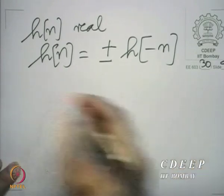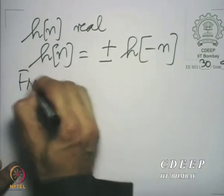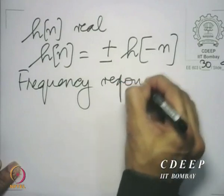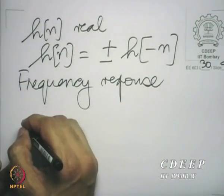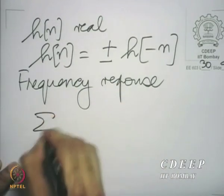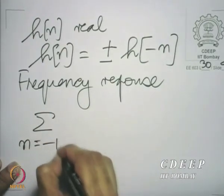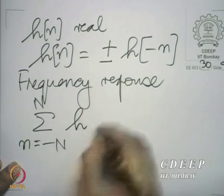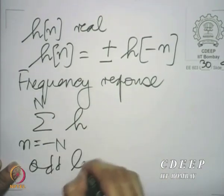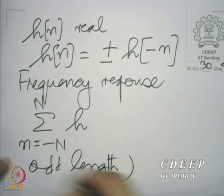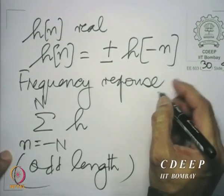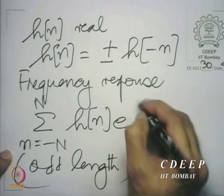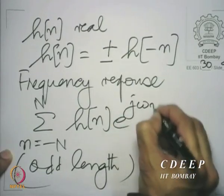Then the corresponding frequency response is of the form: summation n going from minus capital N to plus capital N. Here I am assuming odd length — the same argument can be extended to even length — of h of n times e raised to the power minus j omega n.